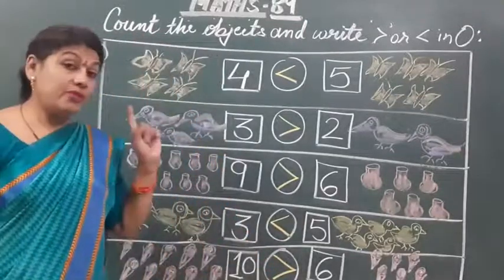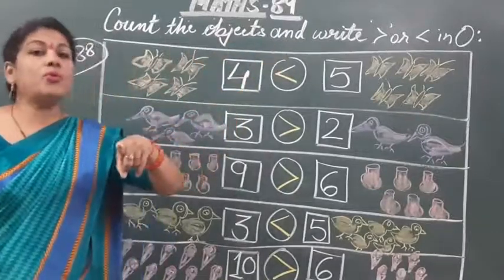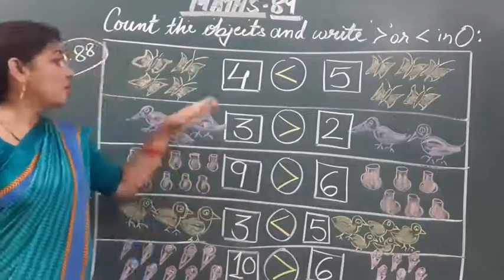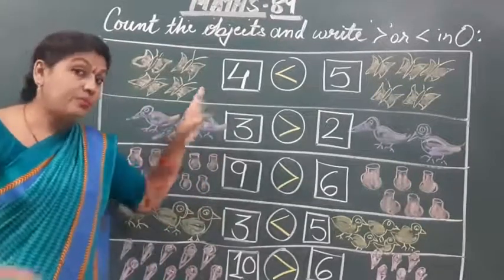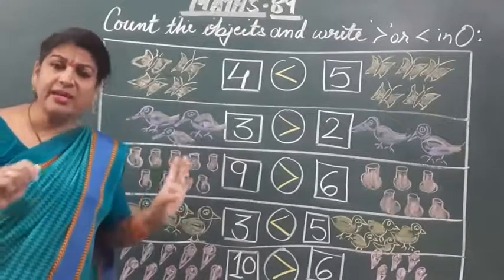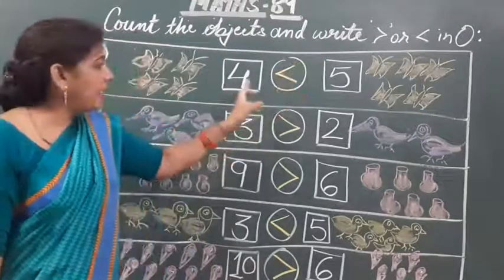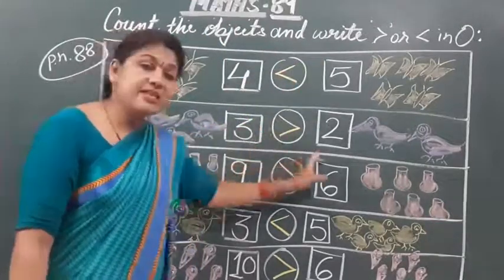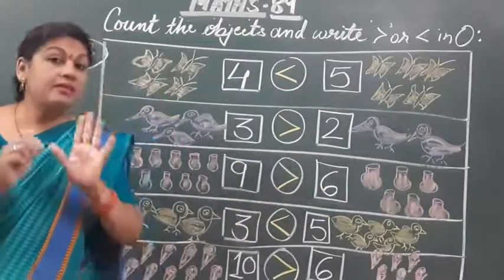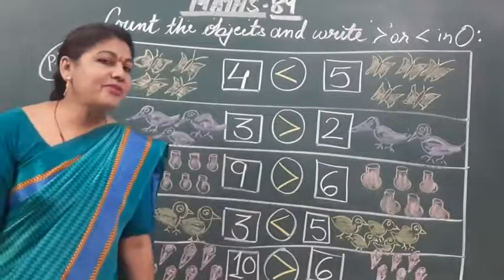And what you will do? You will write this question in your notebook. Agar book hai, do it in your book — toh book mein karna hai. Book nahi hai, then don't worry about it, you will write this question in your copy. Write only these numbers and put the correct sign. That is your today's homework. Thank you. Have a wonderful day. Bye-bye.